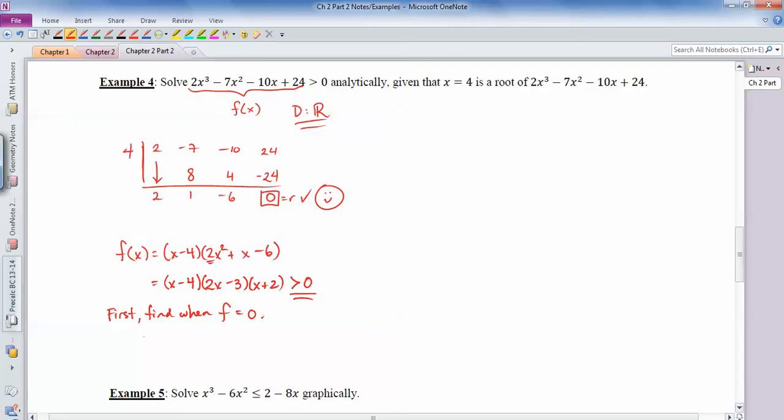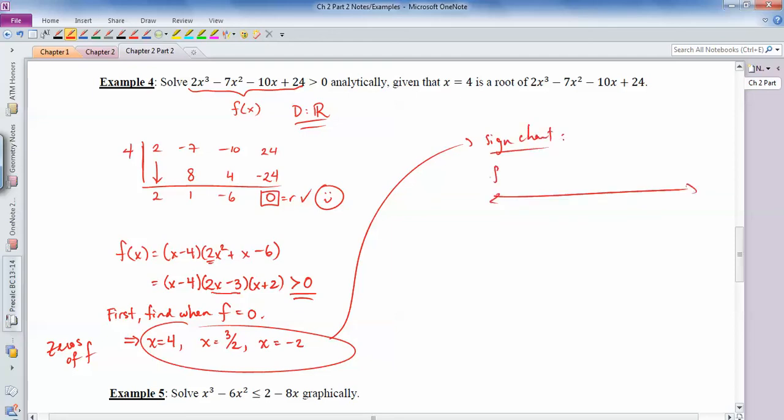So when's f 0? Well, that happens when x equals 4. Or when 2x plus 3 equals 0. So that happens when x equals 3 halves. And also when x equals negative 2. So these are the zeros of f. There are no vertical asymptotes or removable discontinuities because it's just a regular polynomial. So now I'm going to make a sign chart. So my sign chart, I've got f up here. I've got x's down there. I've got negative 2, 3 over 2, and 4 as my zeros.